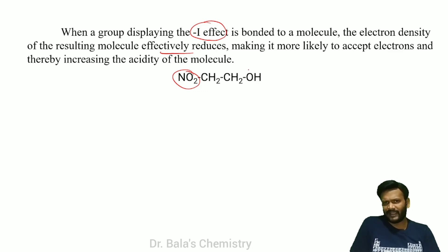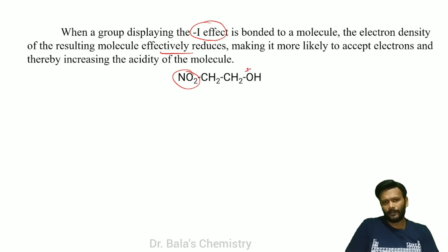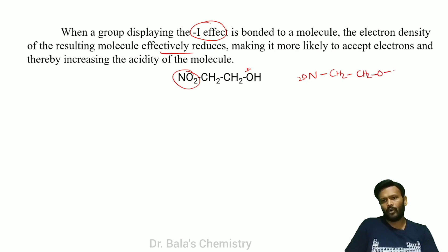If the attached group is electronegative (has a -I effect), it pulls the electron density away from the oxygen, reducing the negative charge. For example, in a CH2-OH structure with an electronegative group attached, the oxygen loses electron density.